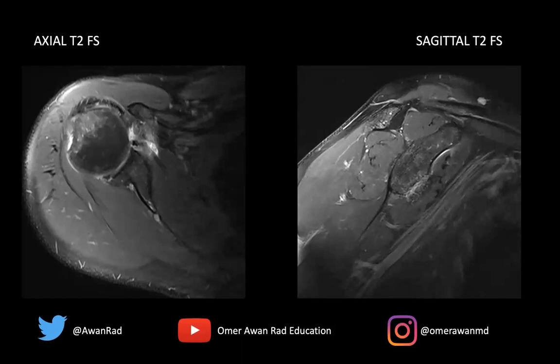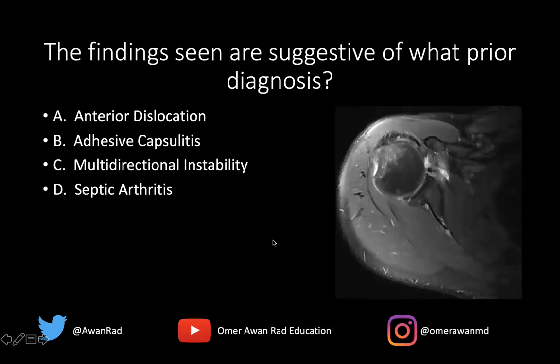Hello everyone, and welcome to MSK Unknown Case Series, case number 44. Here we have an axial T2 fat sat image through the shoulder and a sagittal T2 fat sat image through the shoulder showing some abnormalities that you should pay attention to. The question is: the findings seen are suggestive of what prior diagnosis — an anterior dislocation, adhesive capsulitis, multidirectional instability, or septic arthritis?